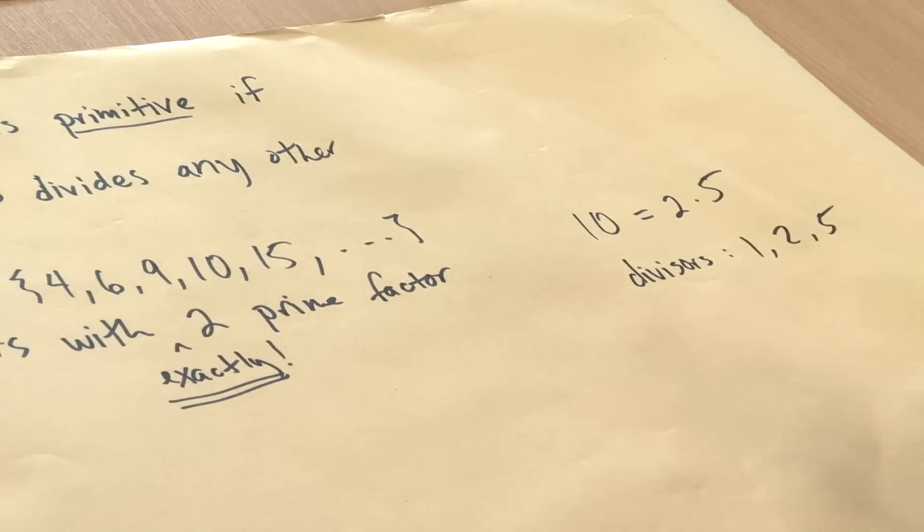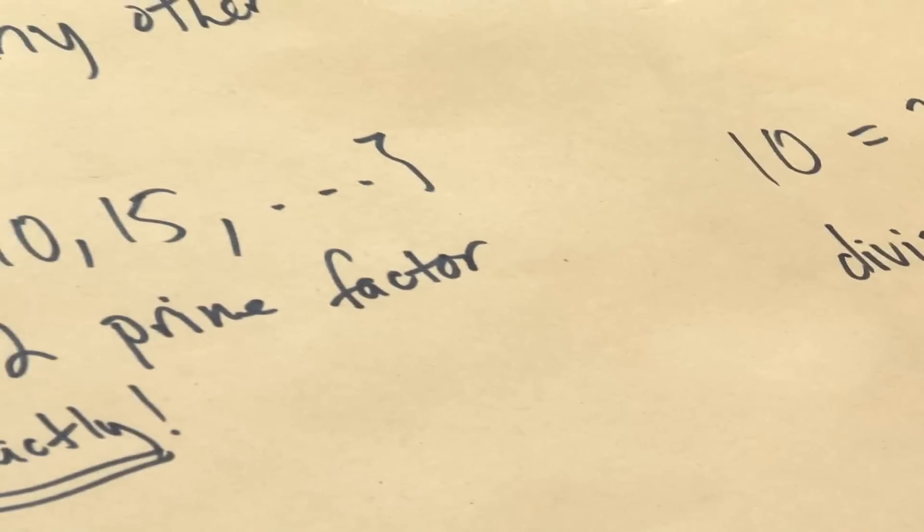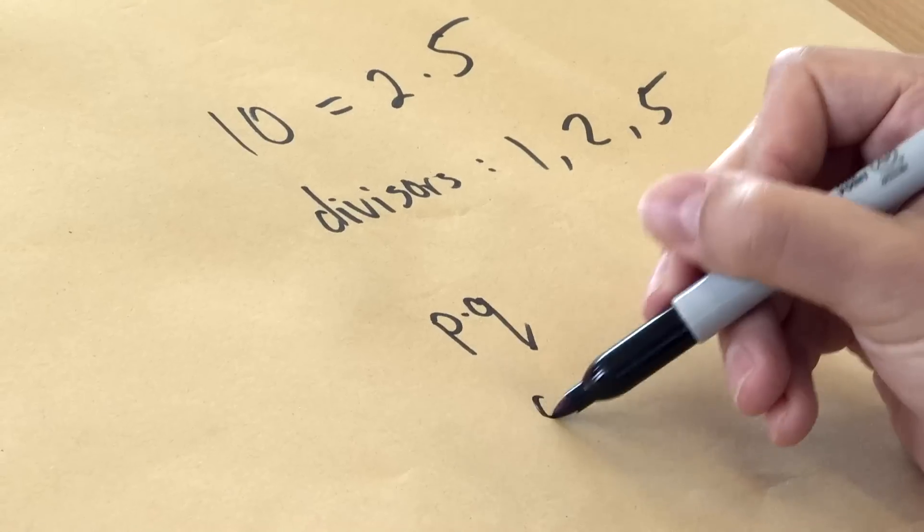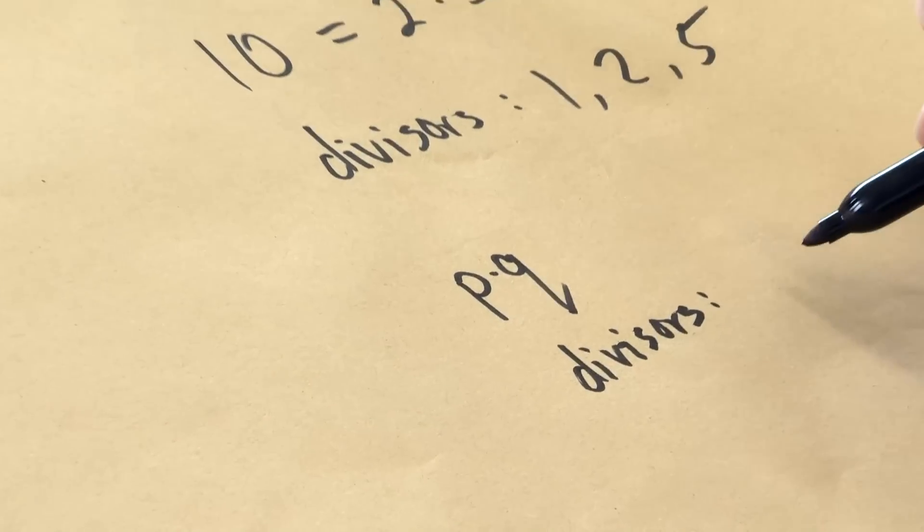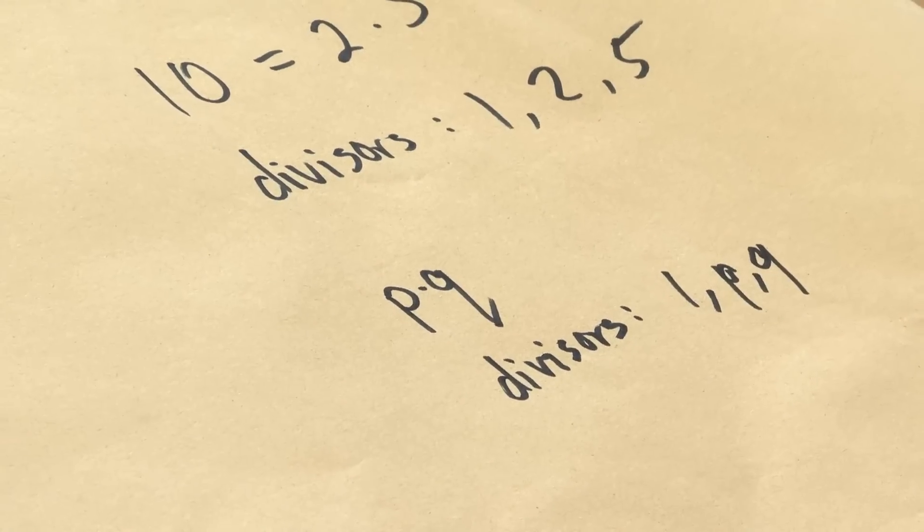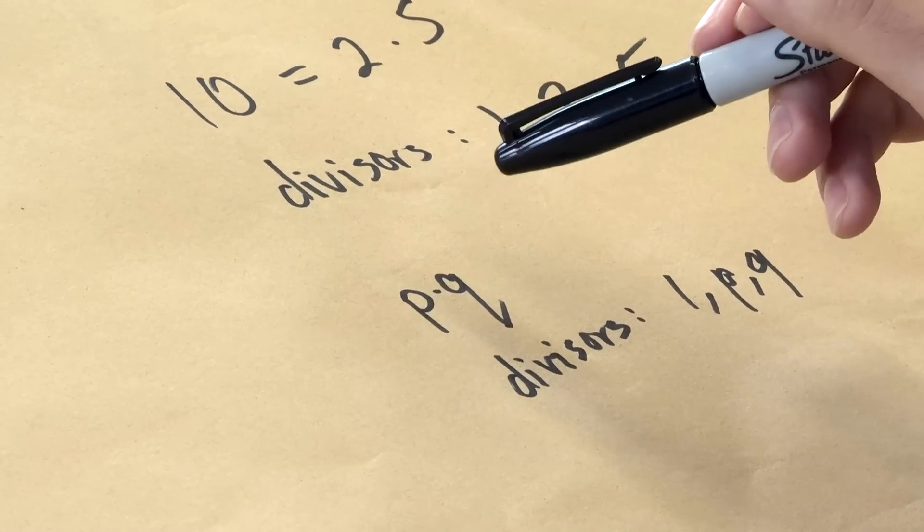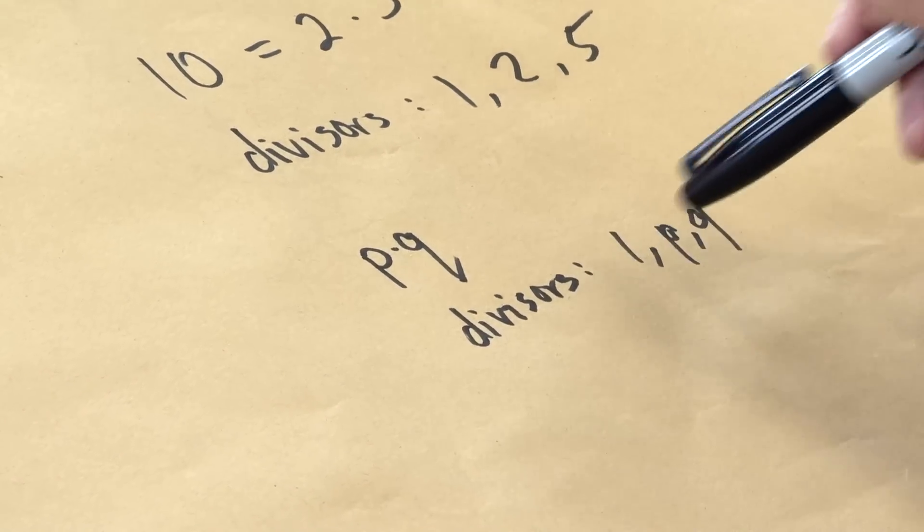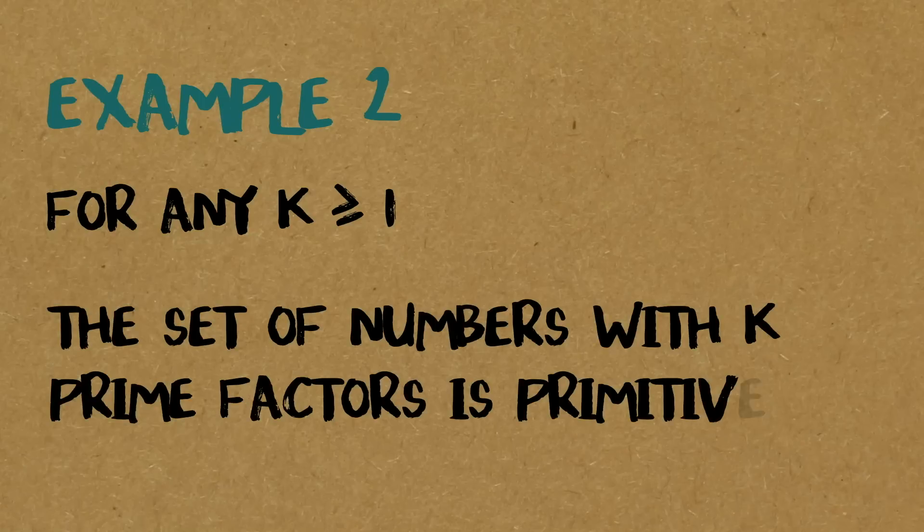More generally, if you take any number, let's say p times q, so any number in this set is going to be exactly of the form p times q, where p and q are primes. But if we play the same game, the divisors of p times q are 1, p, q, and then p times q itself. In general, if a number has k prime factors, then all its divisors will have fewer prime factors, so fewer than k, and all of its multiples will have more than k prime factors.